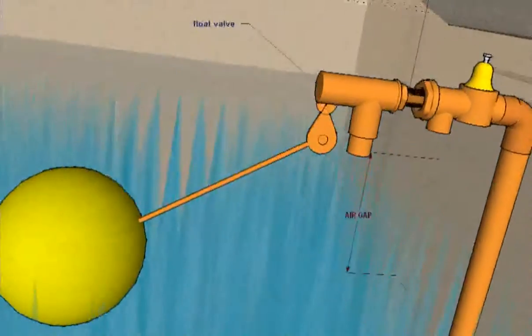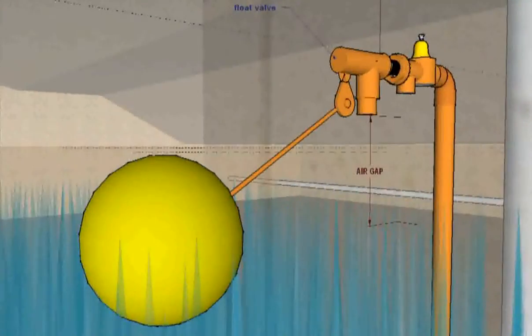The float valve is a critical component. It is attached to a copper float ball and operates the same way as the float valve in a toilet tank. When the water in the cistern reaches a level of about 4 feet, the float valve closes, preventing additional water from flowing into the cistern.